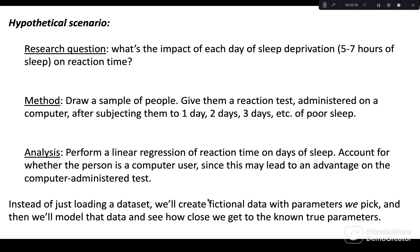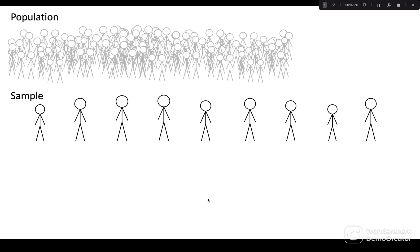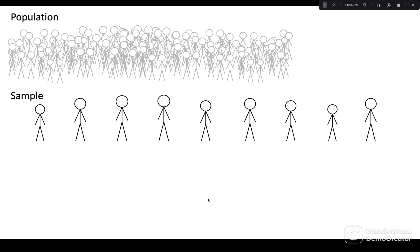We're going to create this data ourselves instead of just loading a dataset. That way, when we see the outputs in R for our model, we'll be able to look back and say, how close did we get to the right answer, since we will know the right answer. You've got a sample representing a broader population that the researchers want to characterize. Because we're making this data up ourselves, we can specify that on average, across all these people, the baseline reaction time with normal sleep is 300 milliseconds. And for every day of poor sleep, we add 45 milliseconds to their reaction time.